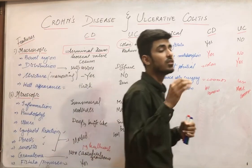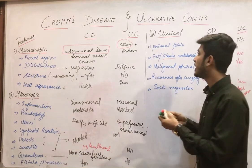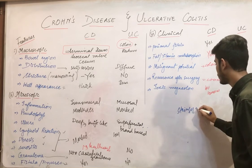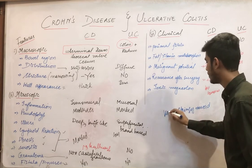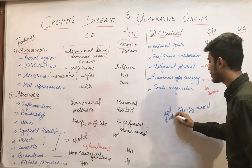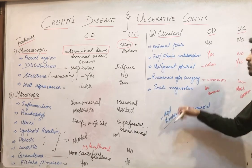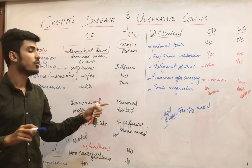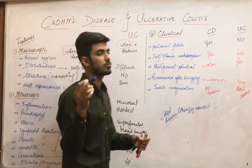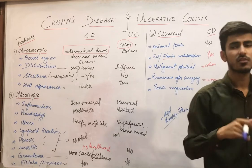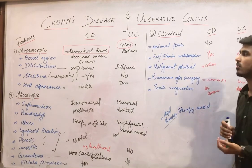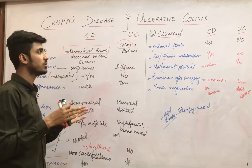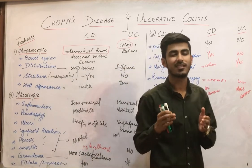In ulcerative colitis, there is also bloody diarrhea, but with a stringy mucoid appearance — stringy mucoid material diarrhea is more characteristic of ulcerative colitis. Extra-intestinal manifestations are the same in both Crohn's disease and ulcerative colitis. This covers all the features — macroscopic, microscopic, and clinical — of Crohn's disease and ulcerative colitis. If you have any confusion or queries, please ask in the comment section. Thank you.